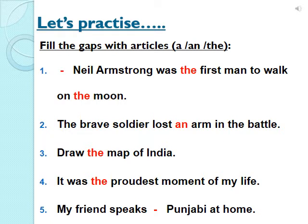Let us practice some more examples as part of revision. Fill in the gaps with articles A, AN, or THE. Number 1: 'Neil Armstrong was the first man to walk on the moon.' Neil Armstrong is a name of a person, so no article before it. 'The first man' — first is an ordinal number, so article THE is used. 'On the moon' — moon is a unique thing, so article THE is used before it.